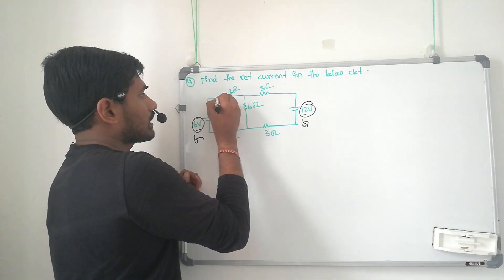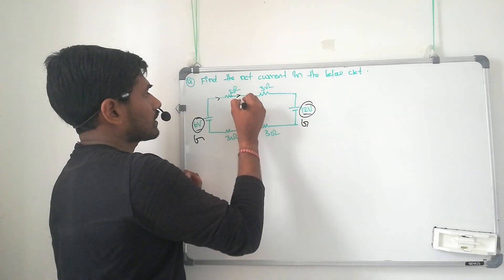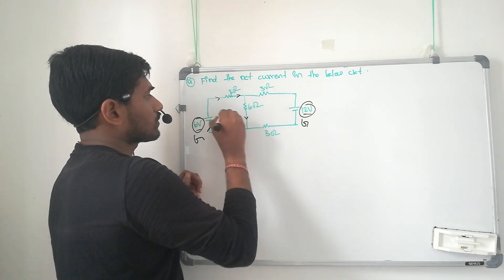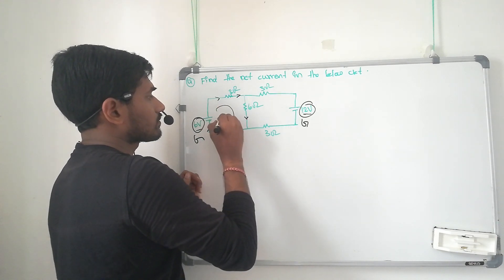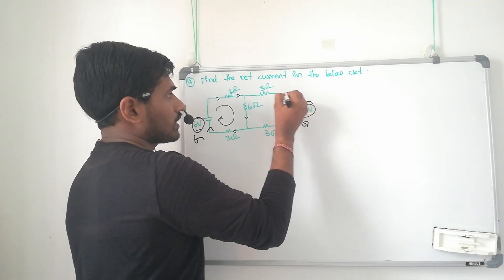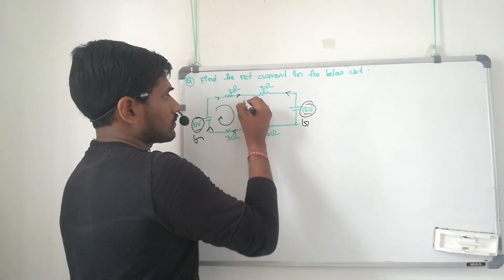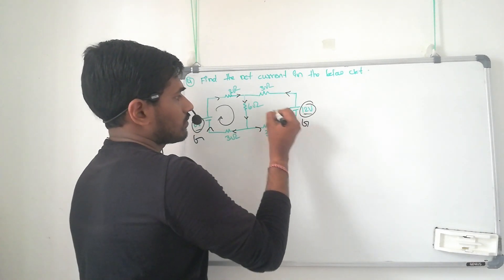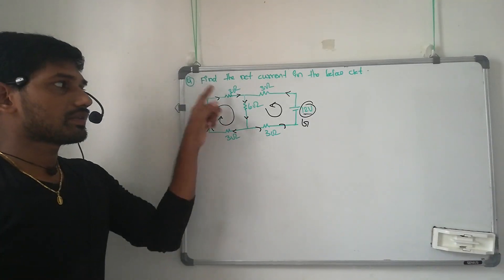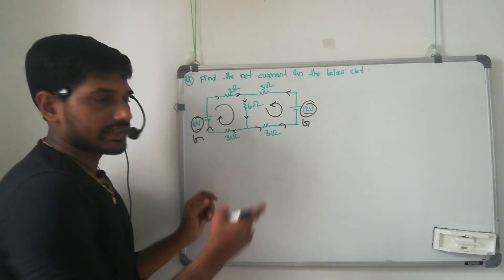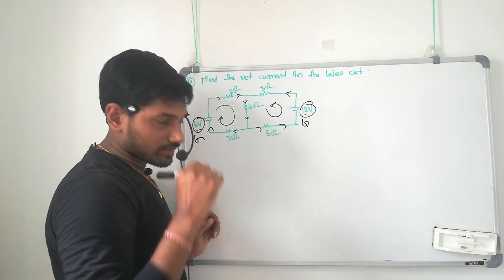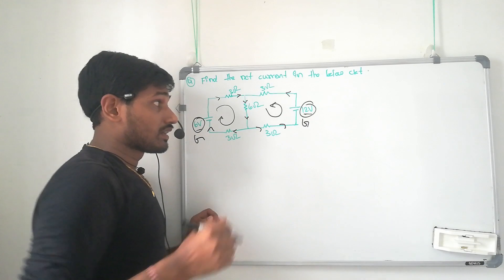Current will be flowing from positive to negative. Similarly here also current flows from positive to negative. So one will be in the clockwise direction and another one will be in the anticlockwise direction — observe that.